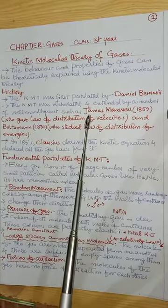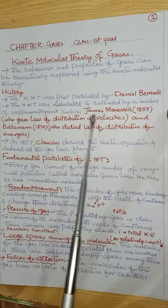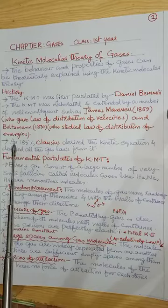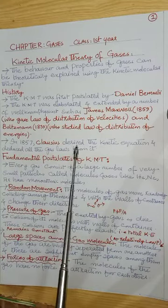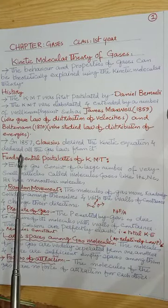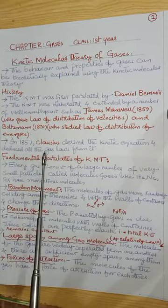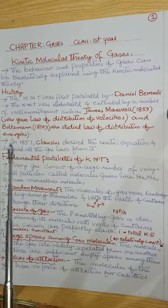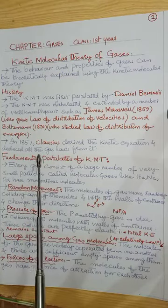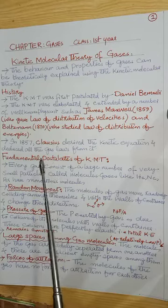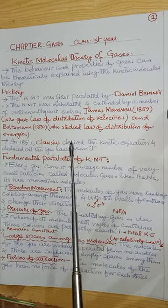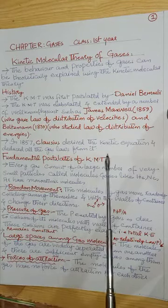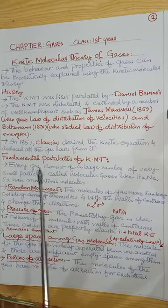KMT was elaborated and extended — Maxwell and Boltzmann did this. In 1857, Clausius derived the Kinetic Equation and deduced all the gas laws from it. Clausius was the scientist who derived the kinetic equation from the Kinetic Molecular Theory postulates.